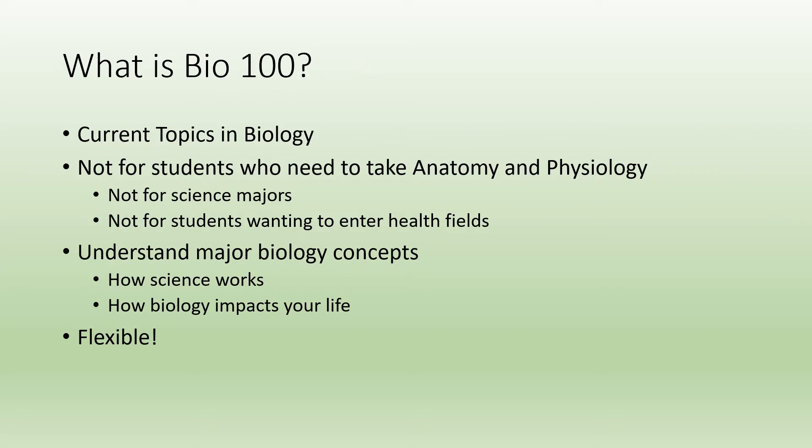Bio 100 is called Current Topics in Biology. If you need to take anatomy and physiology, this is not the biology you should be taking — you should be taking Bio 101. If you want to major in science, you should be taking Biology 105. If you're going into the health fields, you probably need 101. This is really for students who are not going into science or any of the health fields.